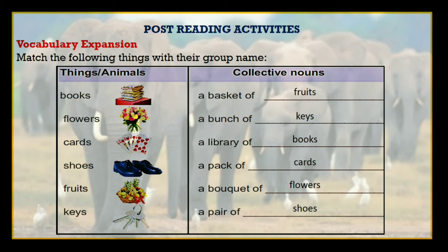The things are books, flowers, cards, shoes, fruits, and keys. A group of fruits — its collective name is a basket of fruits. Next is a bunch of keys. A library of books. A pack of cards. Next is a bouquet of flowers. And next is a pair of shoes. Students, hope your all answers are right.